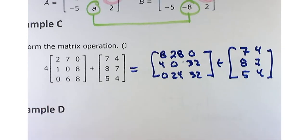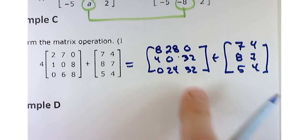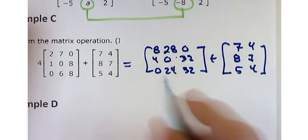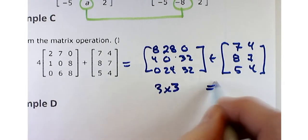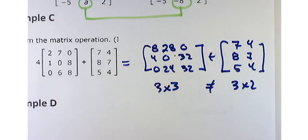Somehow the immortal words uttered on Apollo 13 — that ill-fated Apollo mission to the moon where part of their module blew up — somebody radioed back from the void of space: 'Houston, we have a problem.' We have a problem here too: this is a 3×3 matrix, and we can't add that to a 3×2 matrix. They have to have the same dimensions in order to add them.